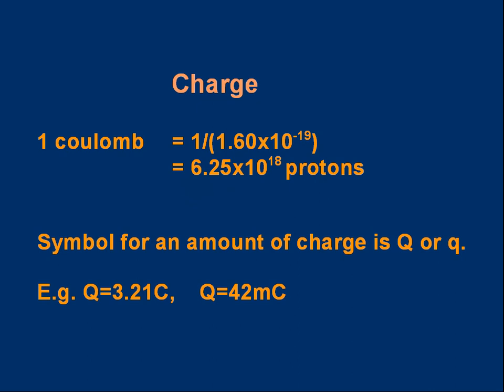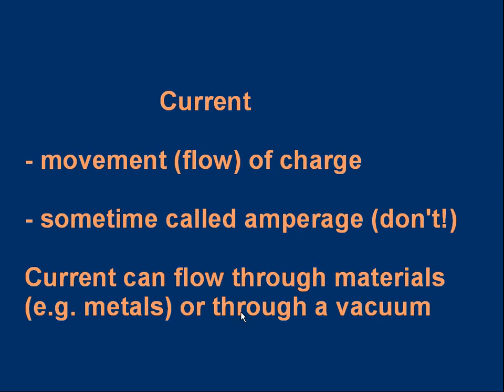When we do calculations using charge, we often use the symbol Q. And we can use a capital Q or a small Q. You'll see both used. And we can write things like Q is 3.21 coulombs, the amount of charge is that number of coulombs. Q equals 42 millicoulombs. Some examples of using the symbol for charge, which is Q.